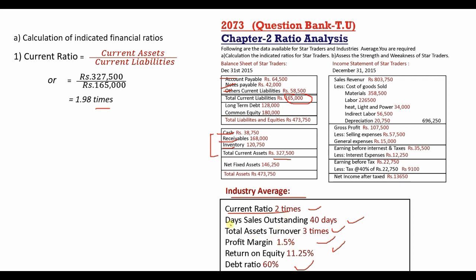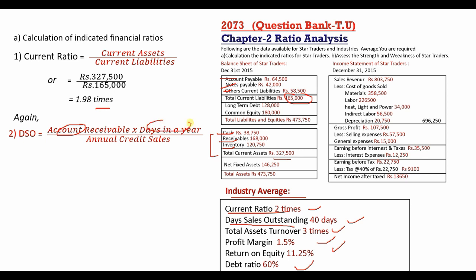Next, day sales outstanding. The formula is: accounts receivable multiplied by days in the year, divided by annual credit sales. Accounts receivable is $1,68,000. Assuming annual credit sales equal total sales of $8,37,500.